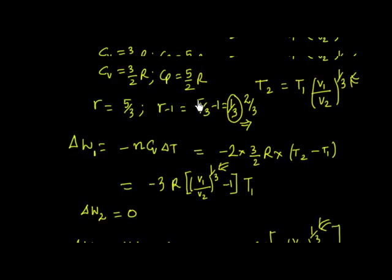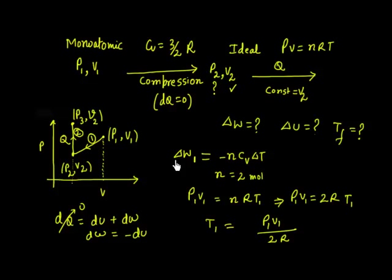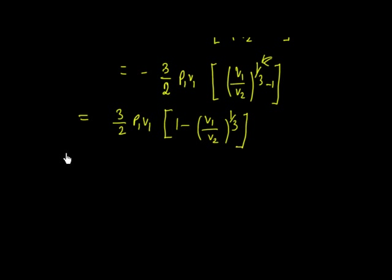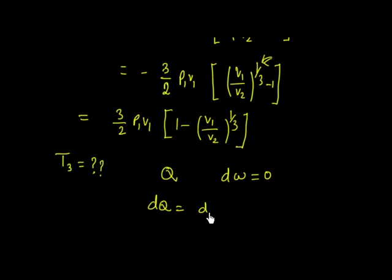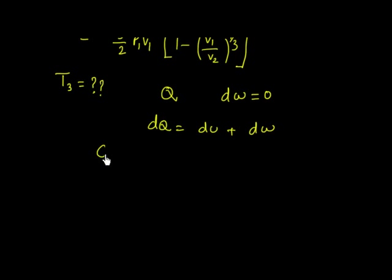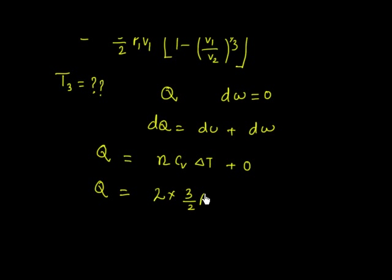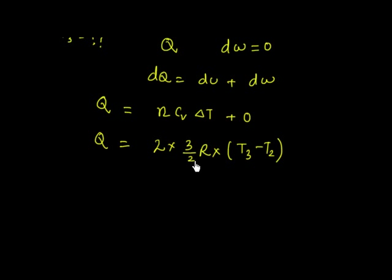For the change in internal energy, I need the final temperature T3. In process 2, DW = 0 (constant volume), so by the first law: Q = DU = NCV(T3 − T2). With N = 2 and CV = 3/2 R: Q = 3R(T3 − T2), so T3 = Q/(3R) + T2.